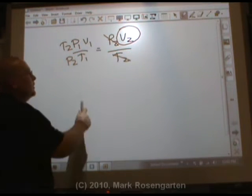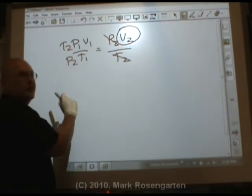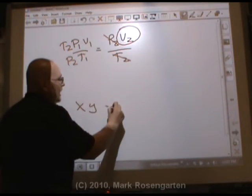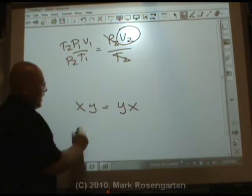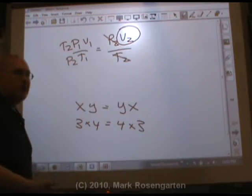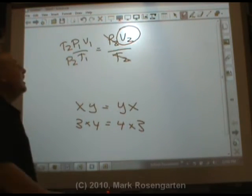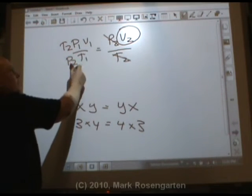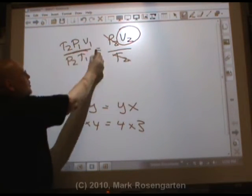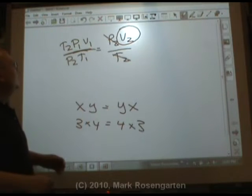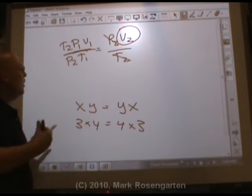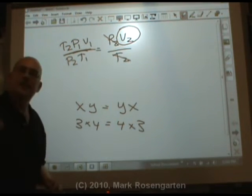I know another question. Does it matter if I make it p2 times t1 or t1 times p2? It doesn't matter. Remember, xy equals yx. It's the same thing. 3 times 4 equals 4 times 3. It doesn't matter when you're multiplying what order you multiply them in. And the same thing goes for algebra. It doesn't matter what order you put them in, as long as they're on the correct side of the division line. You could have made this p1, v1, t2. It doesn't matter what order they go in, because when you multiply them together, you're going to get the same result.